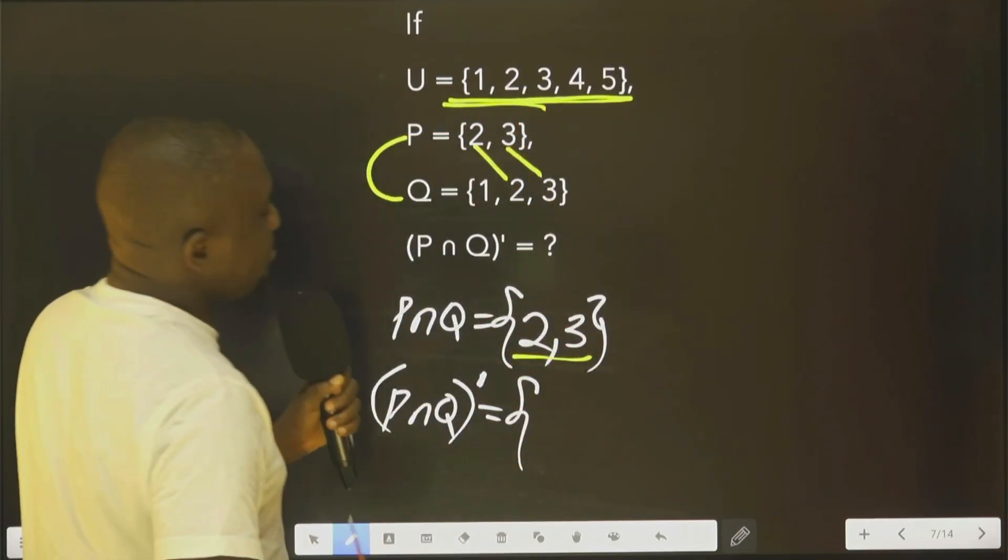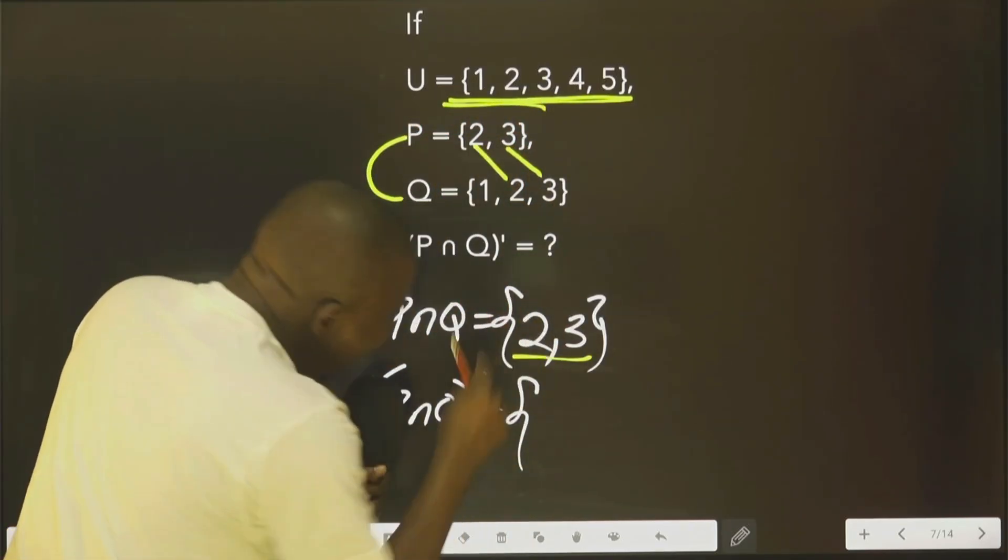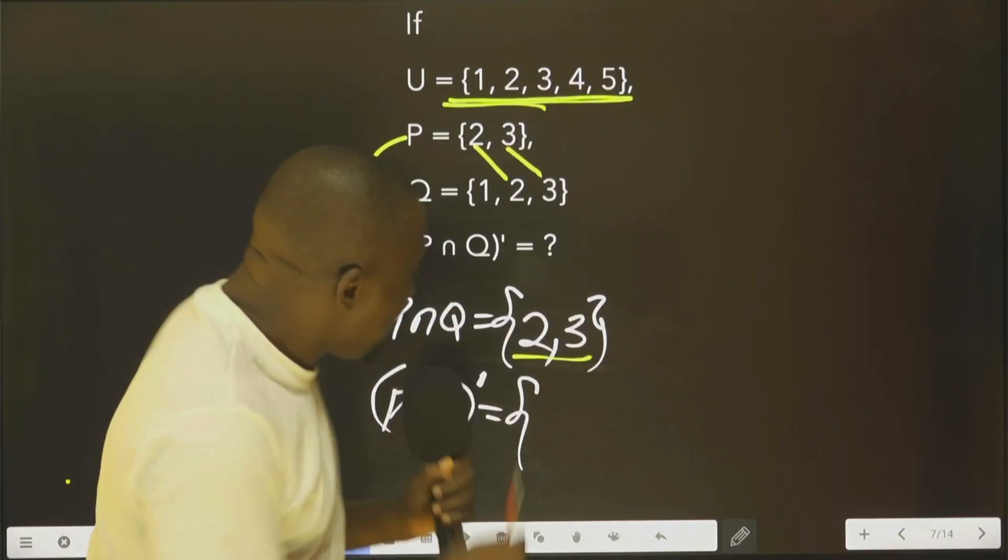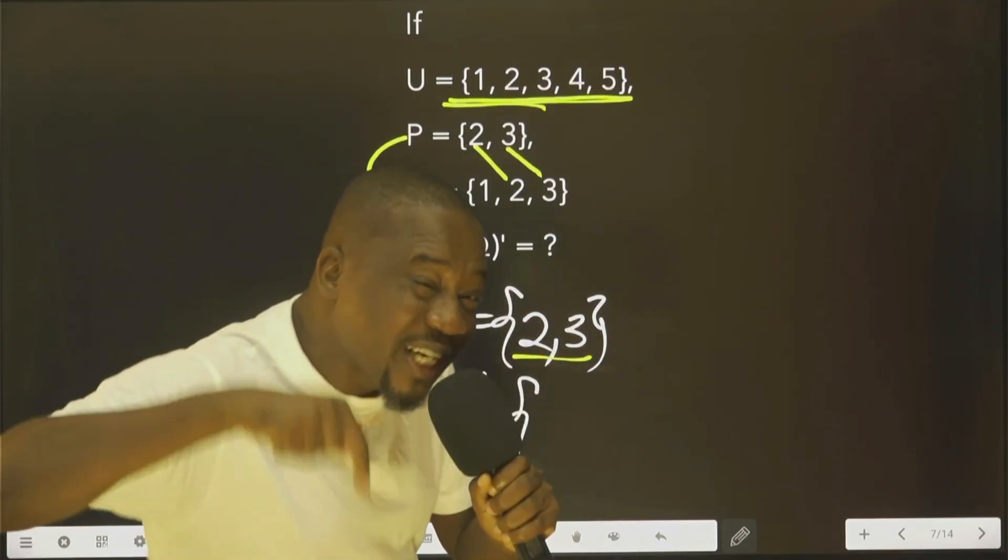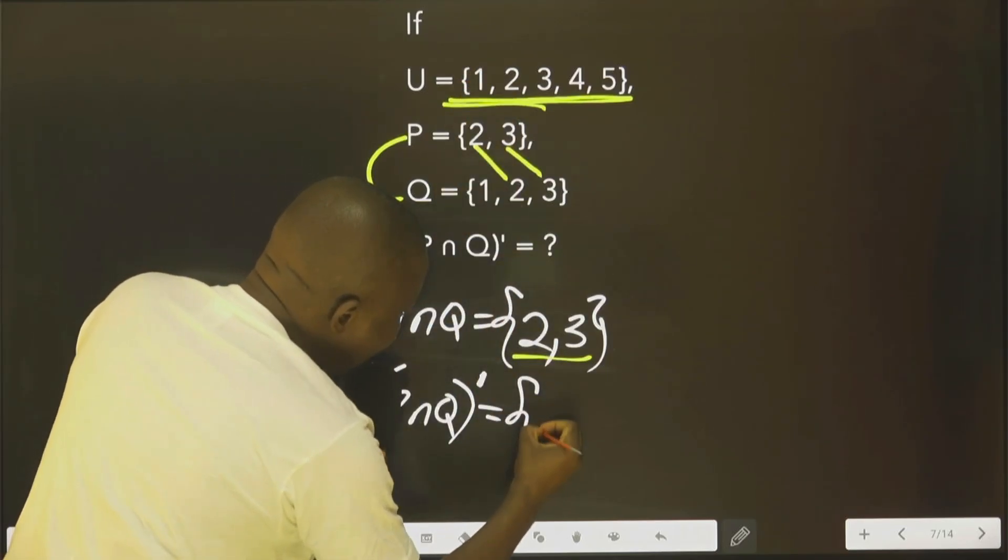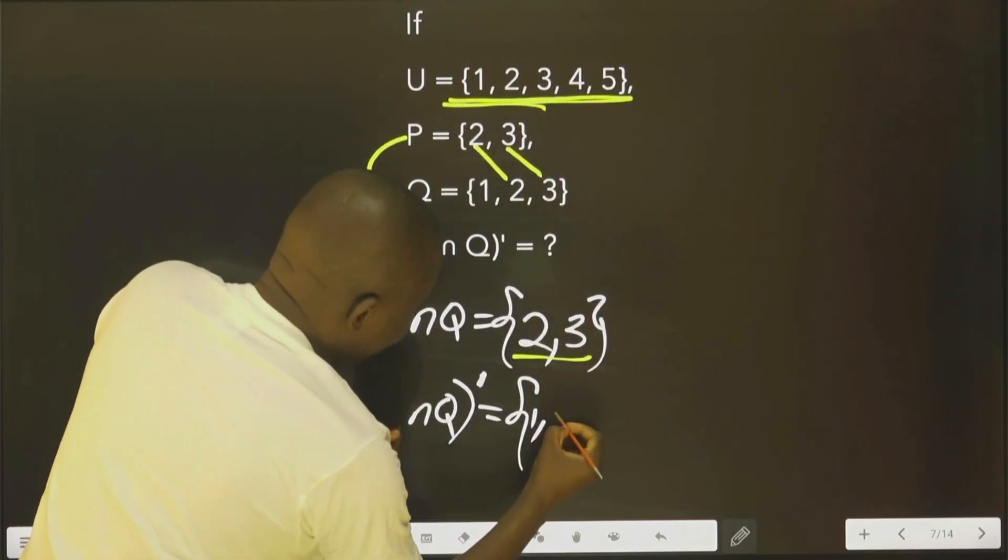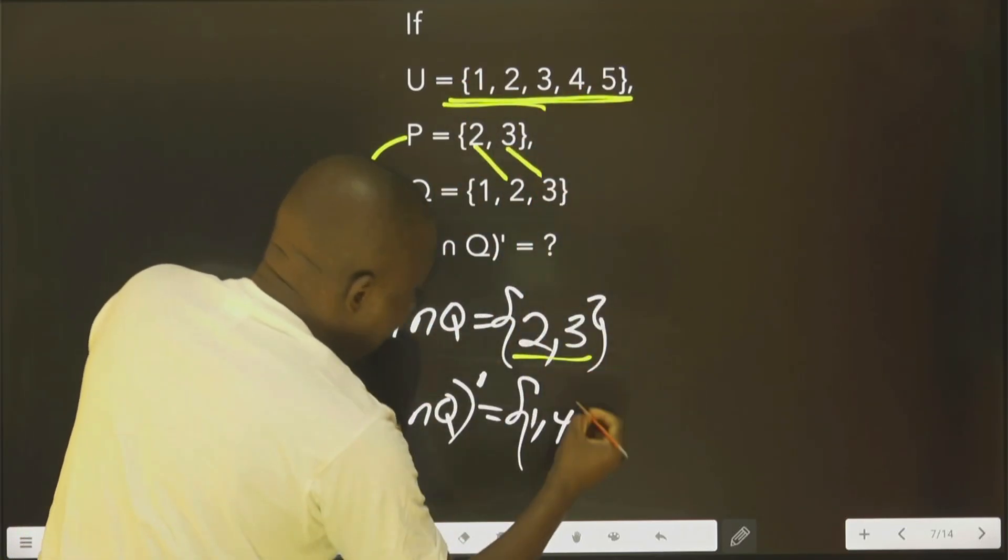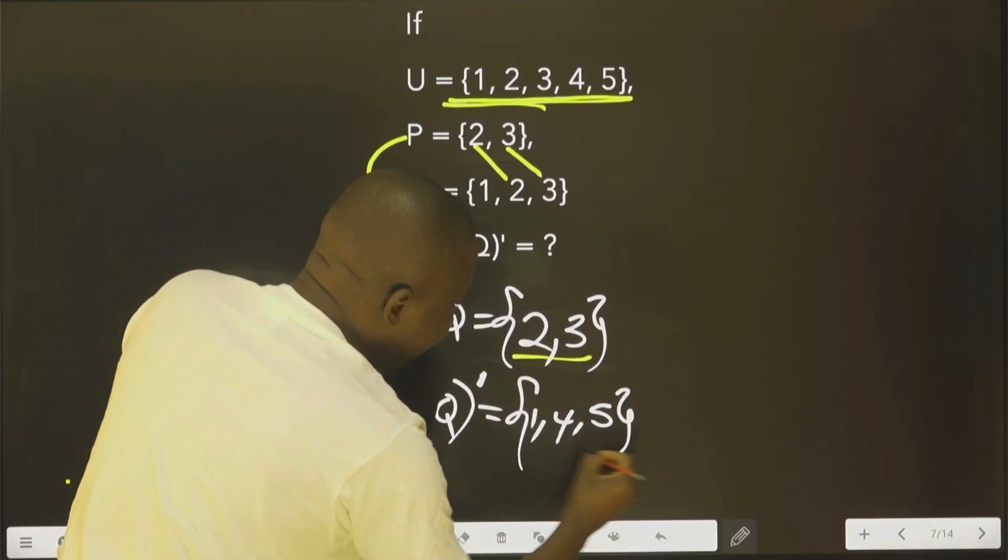is not in P intersect Q. What is it that you don't have that is in the universal set? Let's get them—that is 1, 4, and 5.